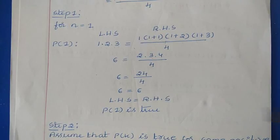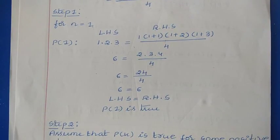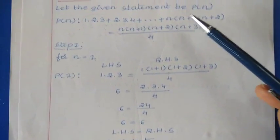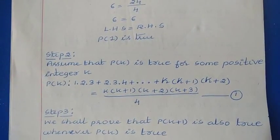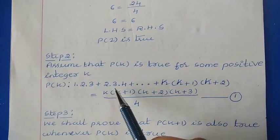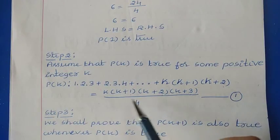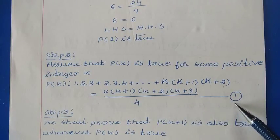Step 1 is also known as the basis step. Steps 2 and 3 are known as the induction step. In step 2, we make the assumption: we take some positive integer K and assume the given statement is true for N=K. Our assumption P(K) becomes: 1×2×3 + 2×3×4 + ... + K(K+1)(K+2) = K(K+1)(K+2)(K+3)/4. Let us call this statement 1.